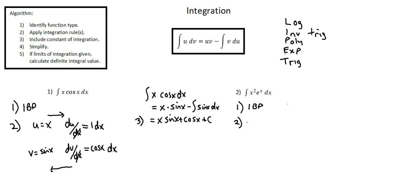Step two: apply the integration rule. I'll identify my u and my dv terms. For u, looking at the LIATE list of functions — there aren't any logarithmic functions, there aren't any inverse trig functions. There is a polynomial: x squared.